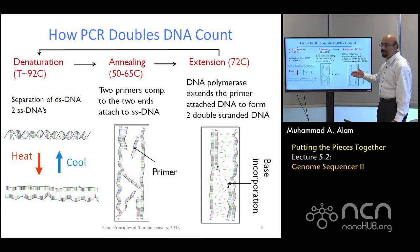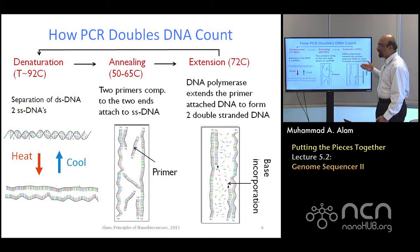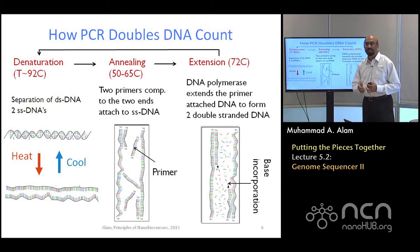At the end of the cycle, the number will be doubled. And you go back, the number will be doubled again, and so on. This is how the classical amplification takes place.